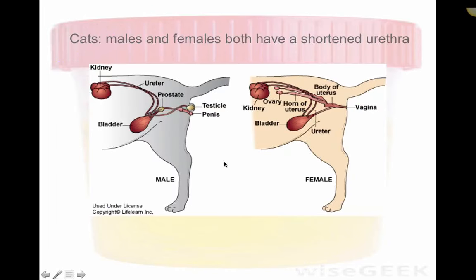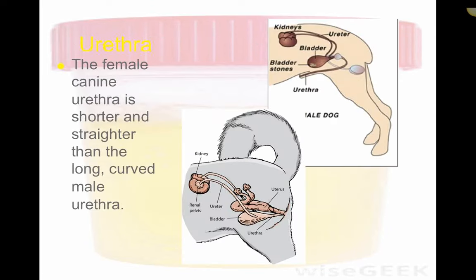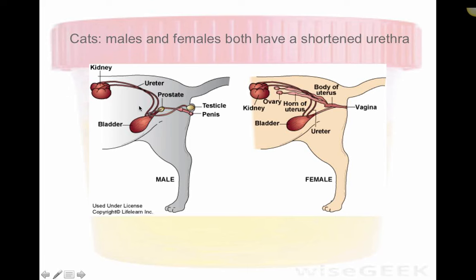Looking at the male dog, the urethra is very long and extended. Cats are quite different — they also have a prostate on their urethra, but rather than having testicles and penis positioned ventrally like a dog, the male cat's testicles sit just under the rectum and the penis is just distal from that, at the caudal end under the tail. This means male cats also have a very short urethra, making them prone to bladder infections. The female feline is very similar to the female canine.